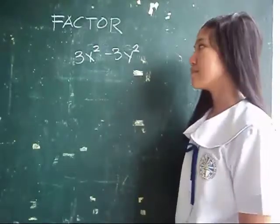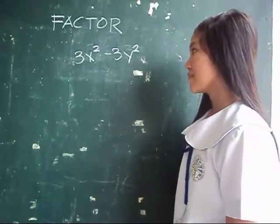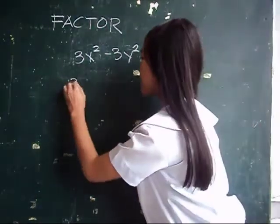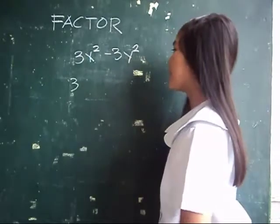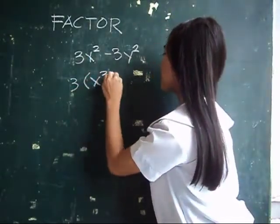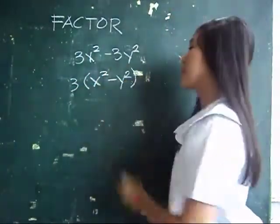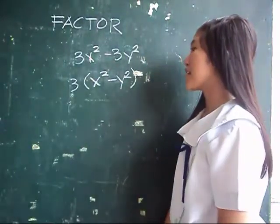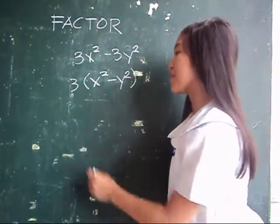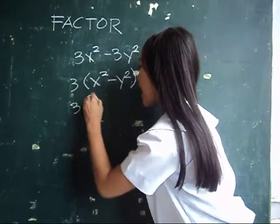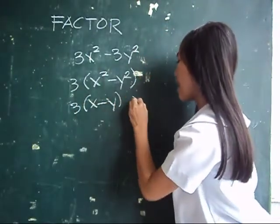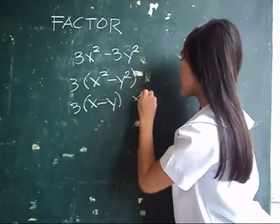Factor 3x squared minus 3y squared. First factor out 3. The other factor is x squared minus y squared. But we can still factor x squared minus y squared as a difference of squares. So the factors are 3, x minus y, and x plus y.